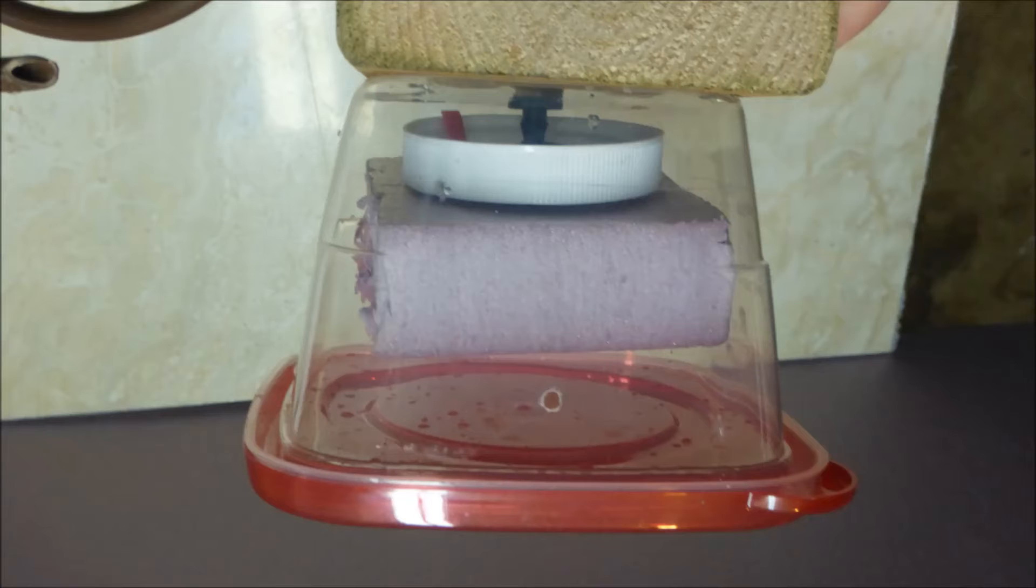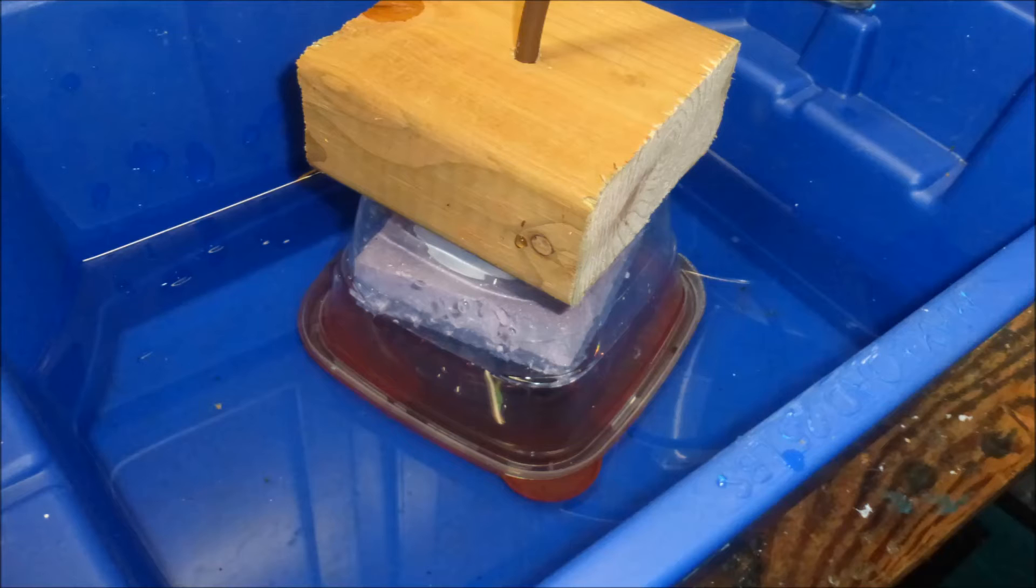The float valve maintains a one and three-quarter inch water level. The height of the water supply tank should not be more than five feet above the float valve.